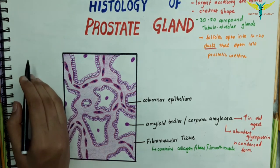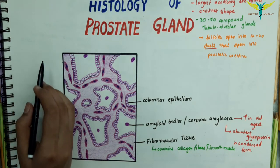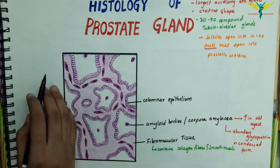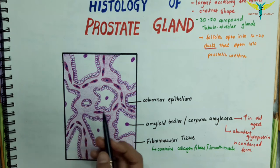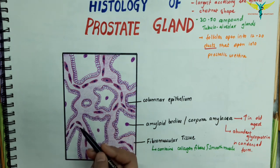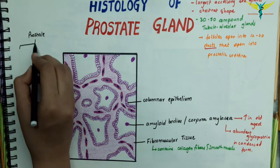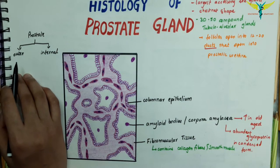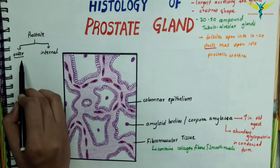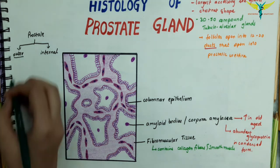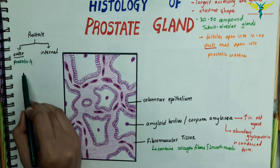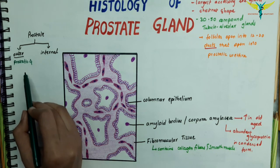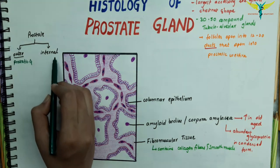On the basis of differences in the size and nature of the glands, the prostate can be divided into an outer or peripheral zone and an inner or internal zone. There may also be an innermost zone that lies immediately around the prostatic urethra. The glands in the outer zone are mainly prostatic glands that open into long ducts joining the urethra.